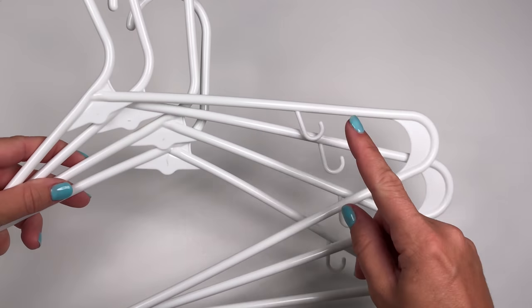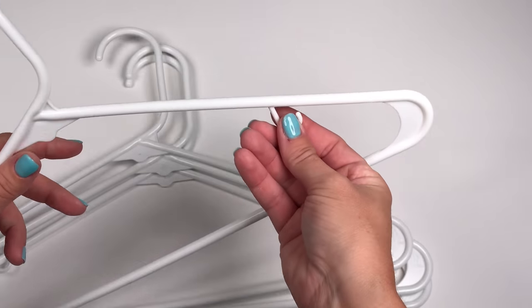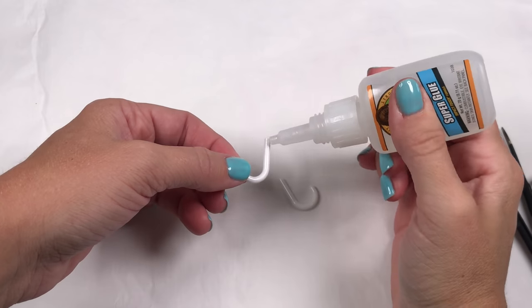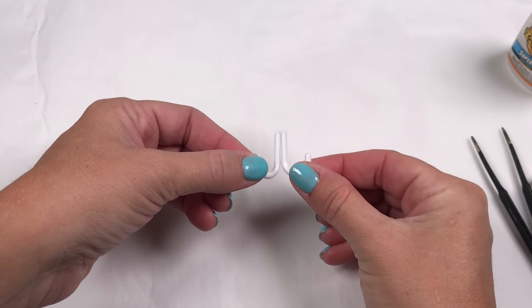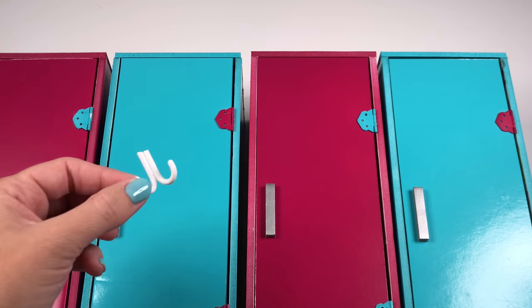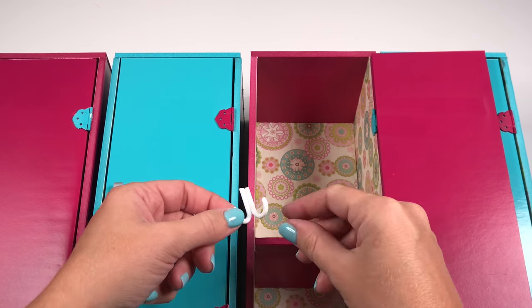To add hooks for the inside of your lockers, you can take these adult size hangers and break off the little hooks. Use super glue to attach two together, and then you can glue it to the inside of your locker. You can place it on the back wall or on the side walls.